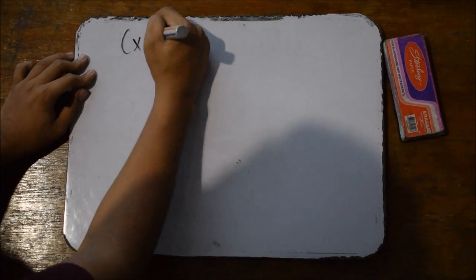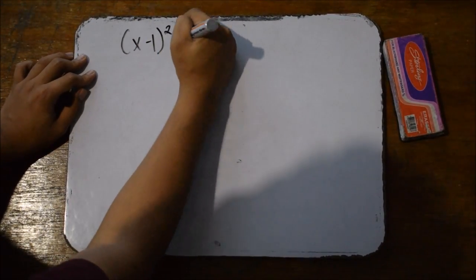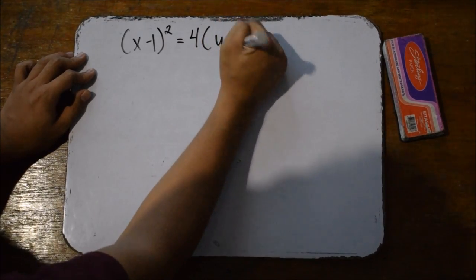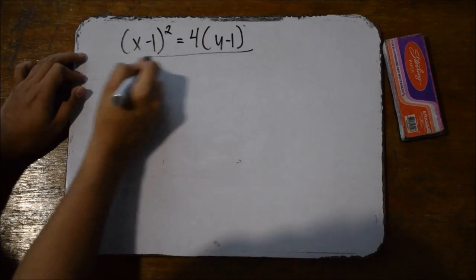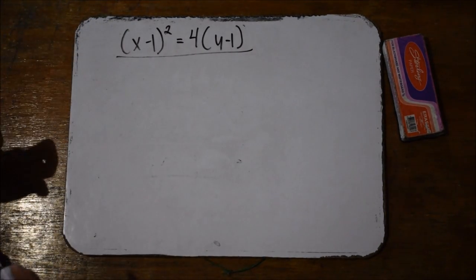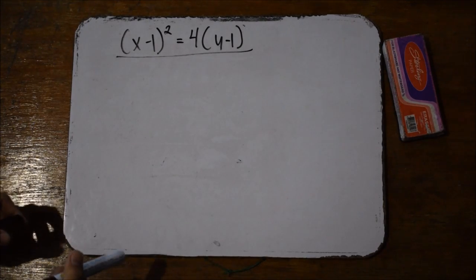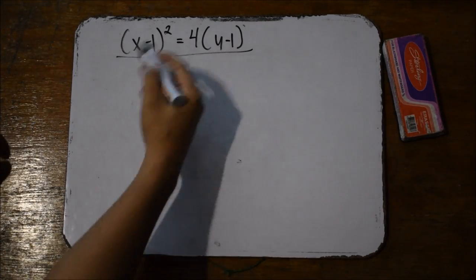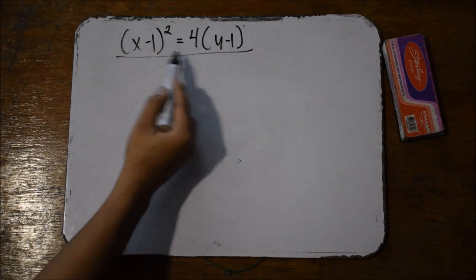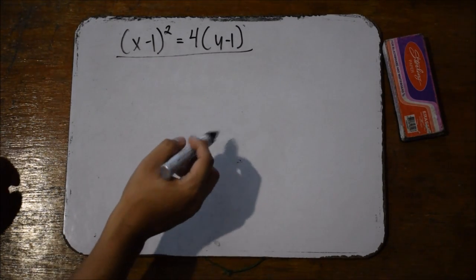For example, we have a parabola in standard form, and its equation is the quantity of x minus 1 squared is equal to 4 times the quantity of y minus 1. We all know that this is the standard form of the equation, so we're going to transform it to the general form. The first step is expanding — we need to expand all terms, including the square of a binomial and 4 times the quantity of y minus 1.